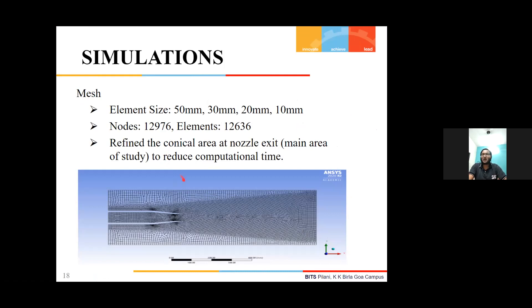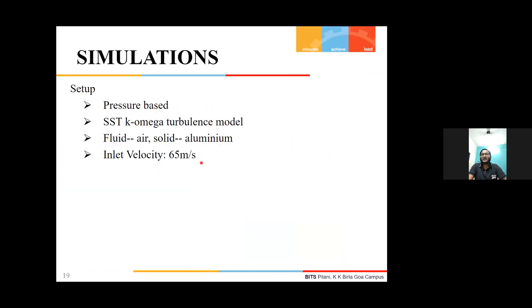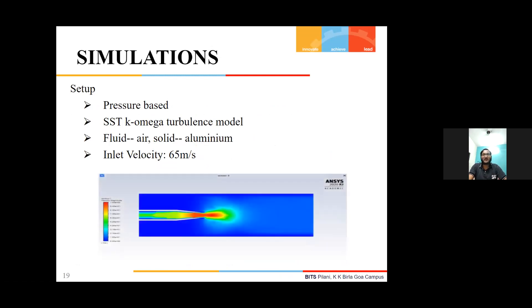We refined the mesh along the main area of our study, which was the conical area at the exit of the nozzle, to decrease computational time. Then we made the setup in Ansys Fluent software. It was a pressure-based model using SST k-omega turbulent model. The fluid we chose was air and solid was aluminum. Velocity was chosen to be a standard 65 meters per second. This is the velocity contour of the result. There were some problems during the mixing of the jet exhaust.